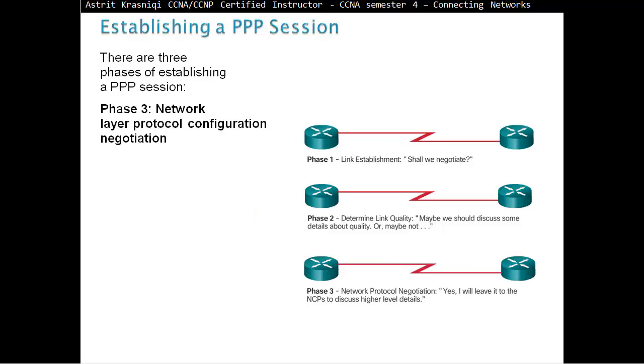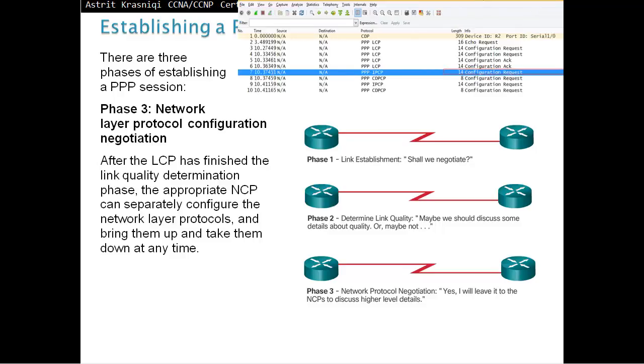Then we have phase 3. Phase 3, network layer protocol configuration negotiation. After the LCP has finished the link quality determination phase, the appropriate NCP can separately configure the network layer protocol and then bring them up and take them down at any time.